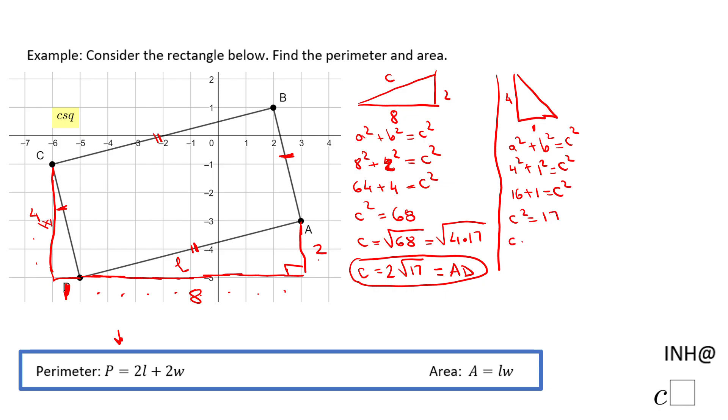And c equals √17. Remember, in this case c is the width, or DC if you want to call it that. Now we can find the perimeter.